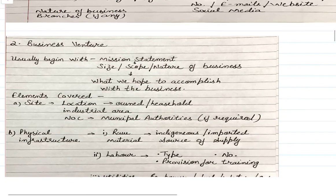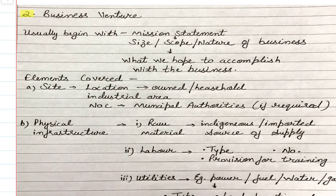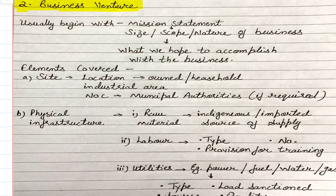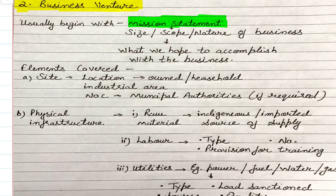After the general introduction, we move to the business venture component. While the general introduction contained the entrepreneur's CV — basic information about the entrepreneur — the business venture provides basic information about the business itself. The business venture element usually begins with your mission statement: where do you want to go, what will be the size of your organization, the scope of your business, and the nature of what you hope to accomplish.